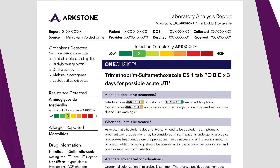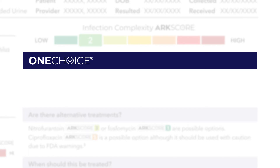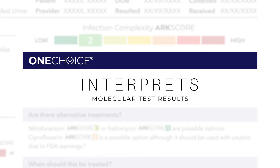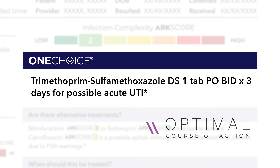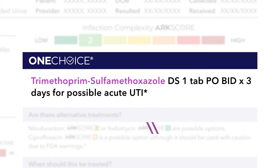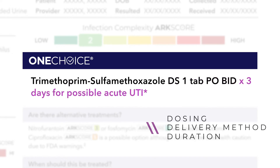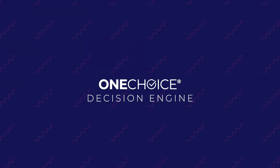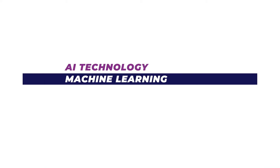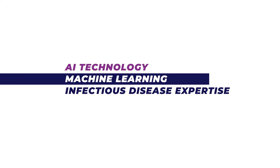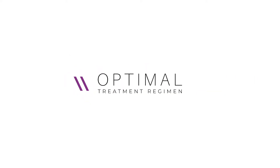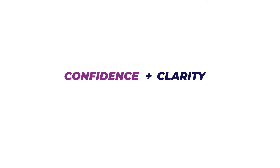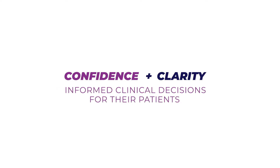Front and center is the cornerstone of our report: OneChoice. OneChoice interprets molecular test results and turns them into an optimal course of action for the physician. Recommended here is the most appropriate antibiotic, dosing, delivery method, and duration for the suspected infection. This recommendation is the result of our patent-pending OneChoice decision engine that combines the latest in AI technology, machine learning, and decades of infectious disease expertise, giving physicians the confidence and clarity to make informed clinical decisions for their patients.